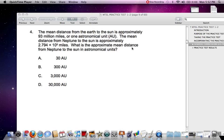What is the approximate mean distance from Neptune to the Sun in astronomical units? A. 30 AU, or astronomical units, B. 300 astronomical units, C. 3,000 astronomical units, or D. 30,000 astronomical units.